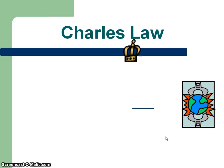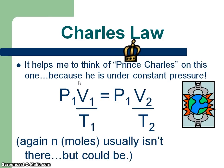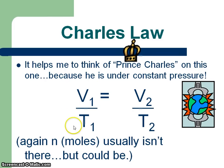Charles — I think about King Charles with the little crown. He's royal, he's under a lot of pressure. So again we take the combined gas law, but because he's under constant pressure, we drop the P's out, and we end up with Charles's law. The N's can be on the bottom but usually aren't because they're usually the same on both sides.